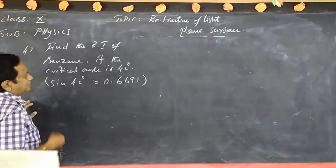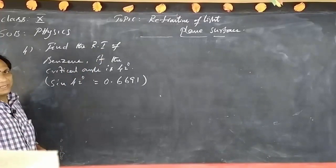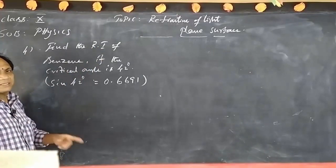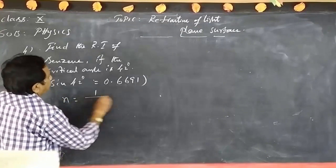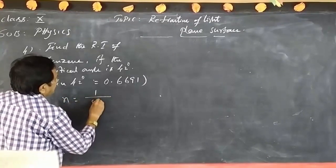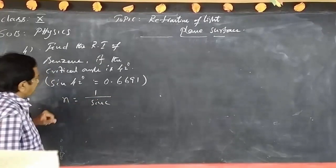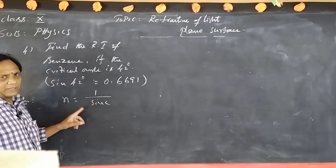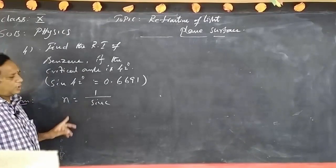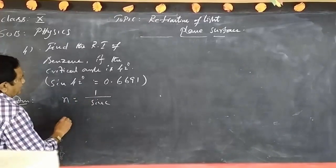The refractive index and critical angle are given. The relation between them is: n = 1 / sin C. That is the formula. First you have to write the formula, then apply it.